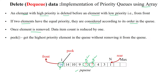Once the element is removed from the priority queue, the count will be decreased by one. The peek operation is used to access the highest priority element in the priority queue without removing it from the queue.